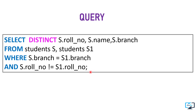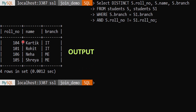To explain self join, I added a new column called branch to the student table. For example, if we want to get names of students from the same branch, we write the query using WHERE clause - there is no keyword like other joins. We SELECT role_number, name, and branch FROM student S, student S1. Here S is the first copy and S1 the second copy of the student table. Condition: S.branch = S1.branch, and additionally S.role_number != S1.role_number so no row compares with itself. The output shows two students from IT and two from ME.